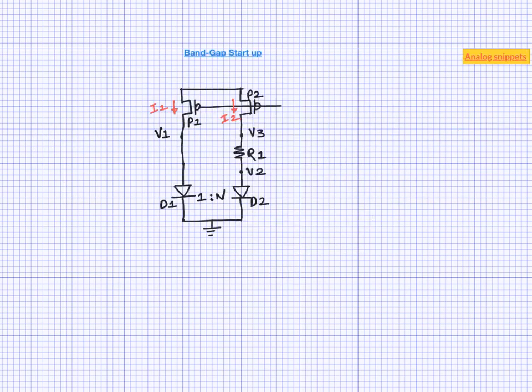In the last video we discussed this circuit. We said that we want to make voltages at V1 and V3 and current in these two branches equal and for that we put a feedback around this circuit.